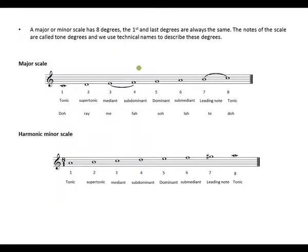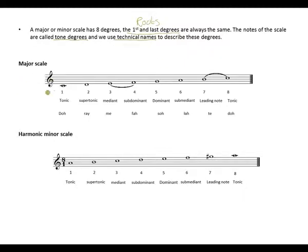The first and the last degrees are always the same — these are your roots. The notes of the scale are called tone degrees, so the eight notes of a scale are called tone degrees, and we use technical names to describe these degrees.